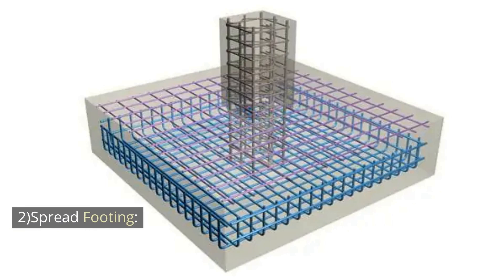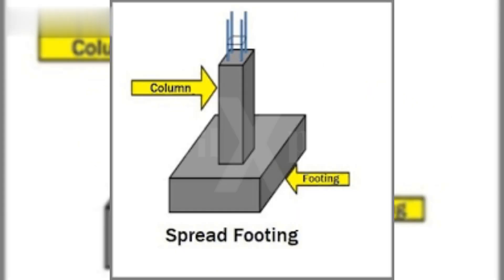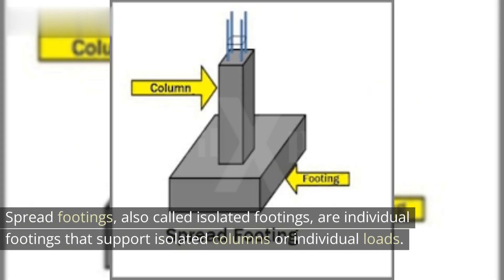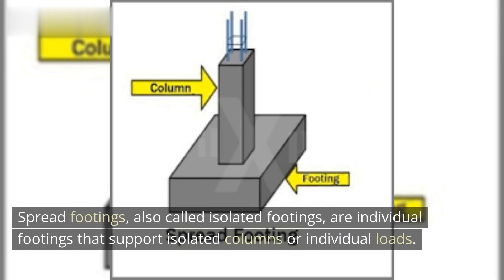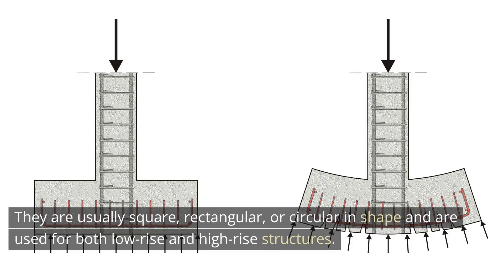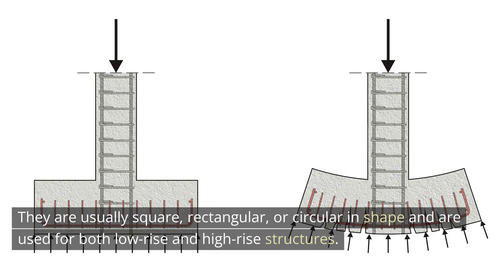2. Spread Footing: Spread footings, also called isolated footings, are individual footings that support isolated columns or individual loads. They are usually square, rectangular, or circular in shape and are used for both low-rise and high-rise structures.